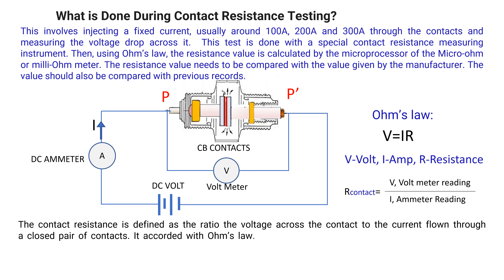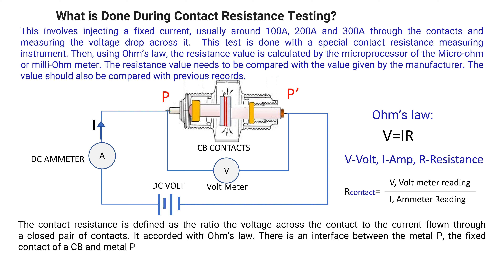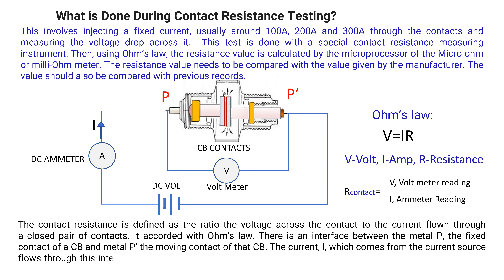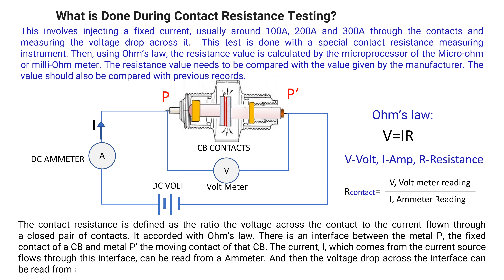There is an interface between the fixed contact and the moving contact of a circuit breaker. The current I, which comes from the current source, flows through this interface and can be read from an ammeter. The voltage drop across the interface can be read from a voltmeter as V, and then the contact resistance value R_contact can be calculated.